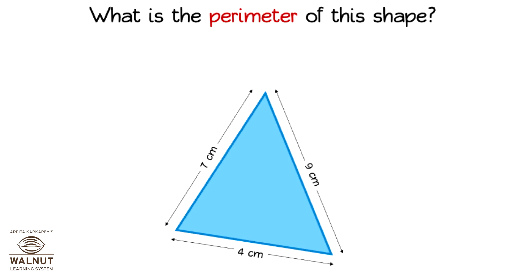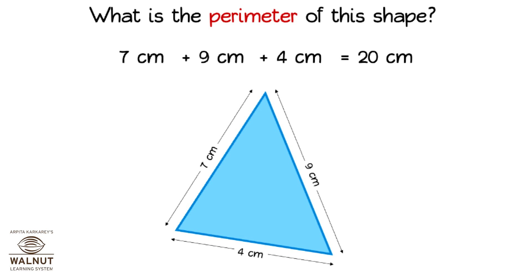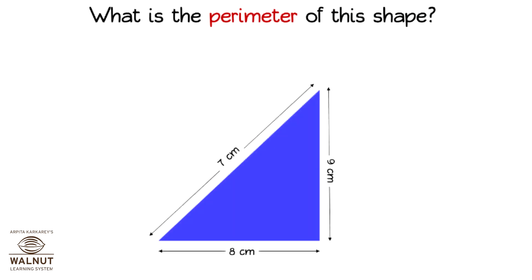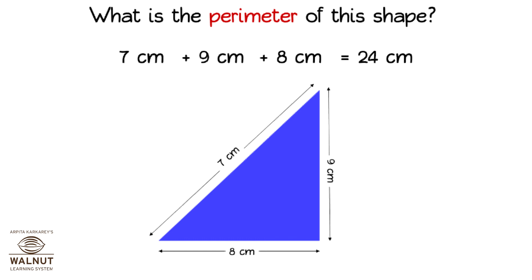What is the perimeter of this shape? We have to go around the shape and add up all the sides. Let us add the sides up. 12 cm plus 8 cm plus 9 cm plus 9 cm plus 8 cm is equal to 24 cm.